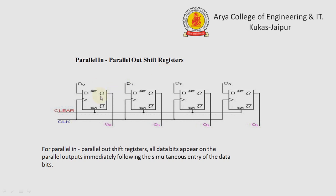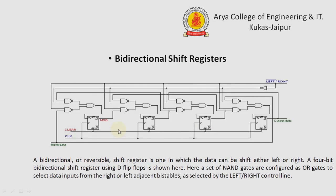The next type is the parallel input parallel output shift register. In this type of shift register, the input is given in parallel form and the output is also taken in parallel form.